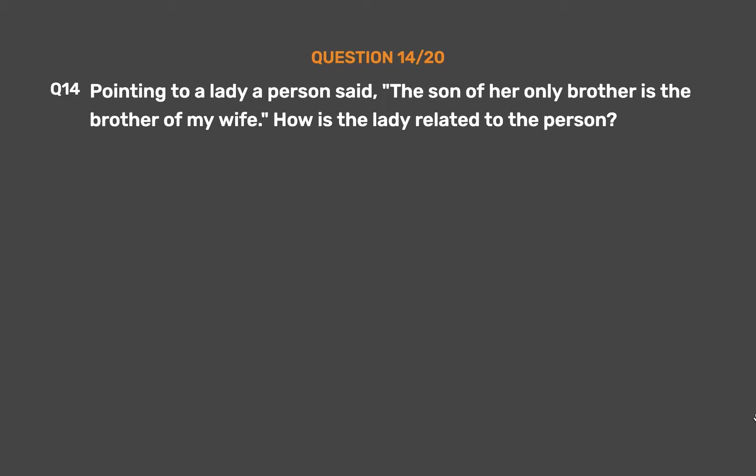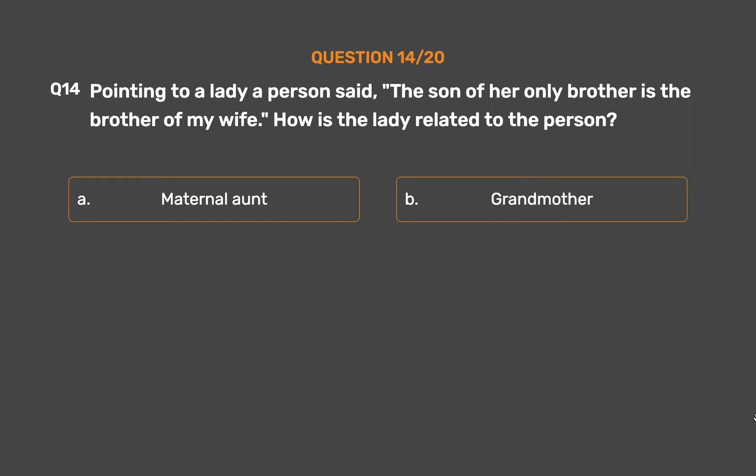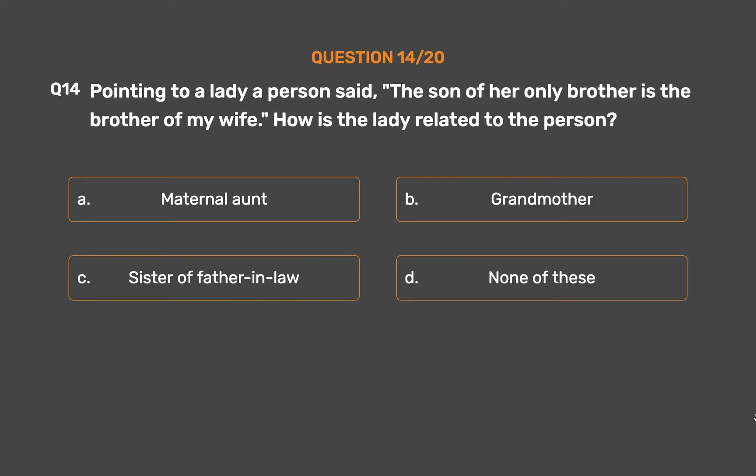Question number 14. Pointing to a lady, a person said, 'The son of her only brother is the brother of my wife.' How is the lady related to the person? Option A: Maternal aunt. Option B: Grandmother. Option C: Sister of father-in-law. Option D: None of these.